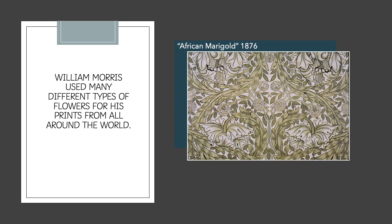William Morris used many different types of flowers from all around the world, not just from Britain, because many of his customers actually travelled around the world and he wanted to be able to sell to a wide range of people. As you can see here, there's a very prominent flower at the bottom, then smaller flowers around the leaves and stems. He didn't just draw straight stems — they're bendy, they twist, and they make a pattern. He was really keen on this idea that flowers were bending rather than just straight.